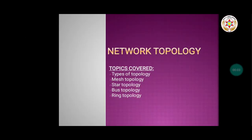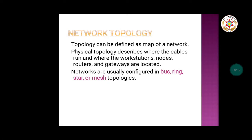In today's video we are going to discuss network topology and the different types of topology. Topology can be defined as a map of a network. Physical topology describes where the cables run and where the workstations, nodes, routers, and gateways are located. Networks are usually arranged in bus, ring, star, or mesh topologies.